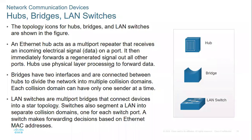Apart from routers and switches, we also have the hub, but we no longer use hubs. When a hub receives information, it amplifies it and sends it to all ports — it broadcasts everything, which makes the network very slow. When you have a network with hubs, you can separate it using a bridge. Advances in technology led to the hub being replaced with the switch.